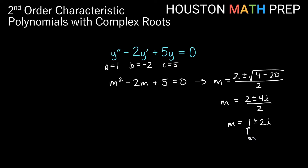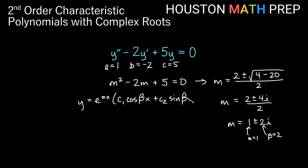Reducing both terms on top by 2 gives us 1 plus or minus 2i. So our alpha is 1 and our beta is 2. Our solution form is e to the alpha x times the quantity c1 cosine of beta x plus c2 sine of beta x, which gives us e to the x times the quantity c1 cosine 2x plus c2 sine of 2x.